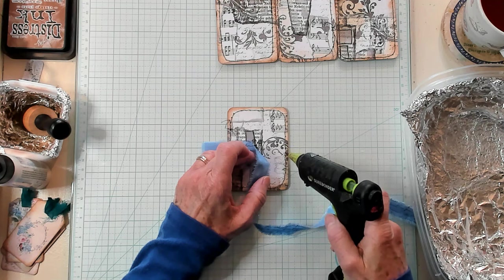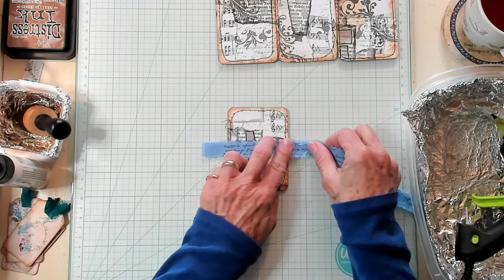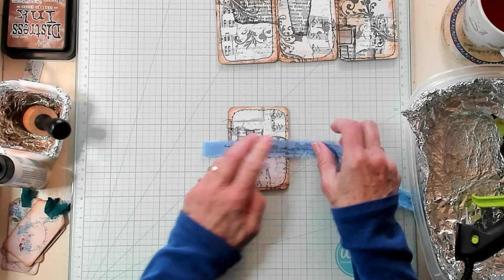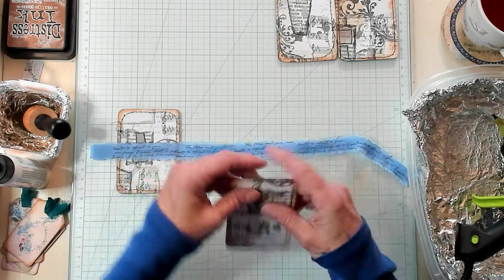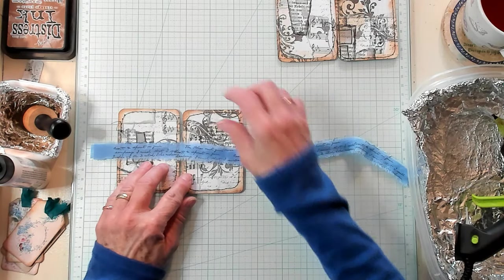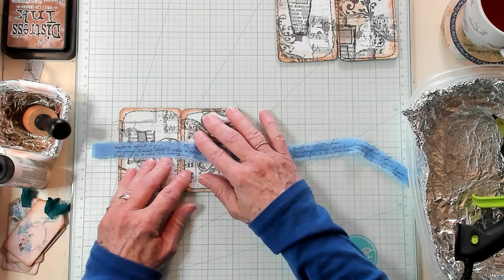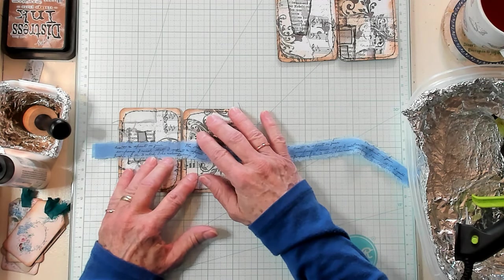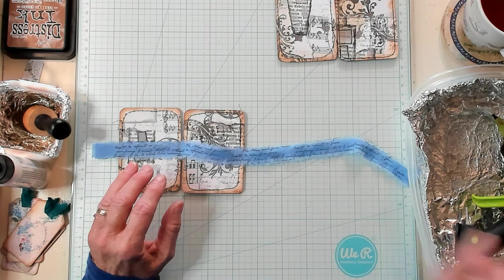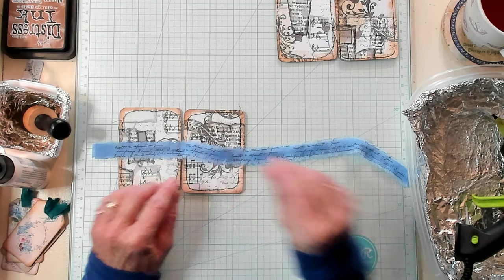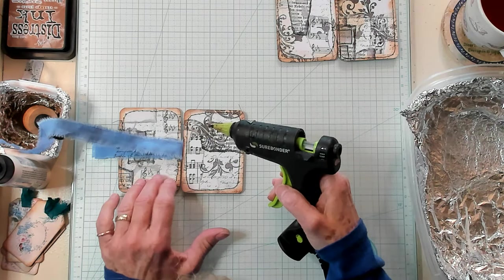Now, I'm using hot glue because it's quick, it's easy, and it's great for videos. But you can use whatever glue that you like, whatever you like to use on fabric. I'm not butting it right up close to it. I'm leaving just a smidgen. What's a smidgen? I don't know. Just a little bit.